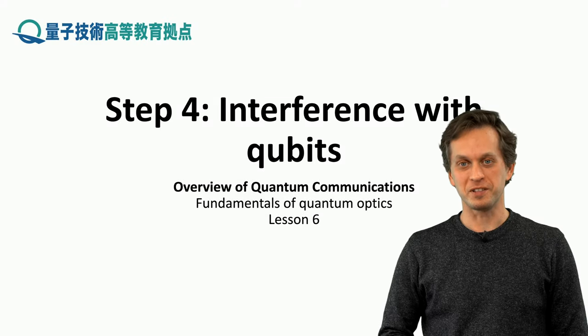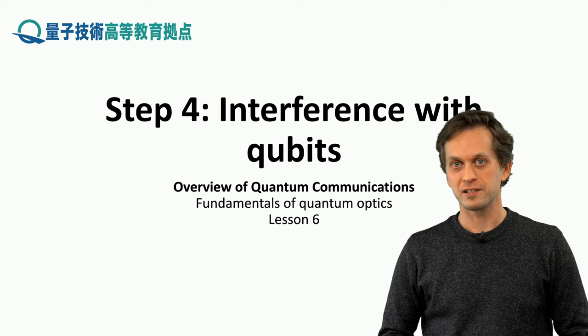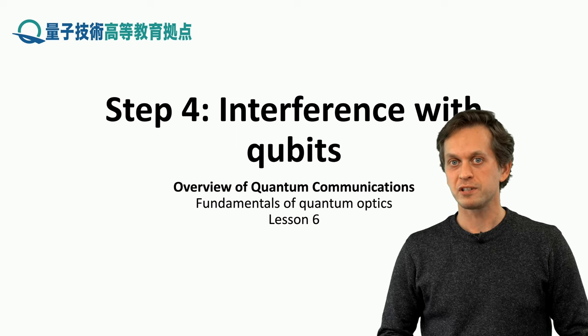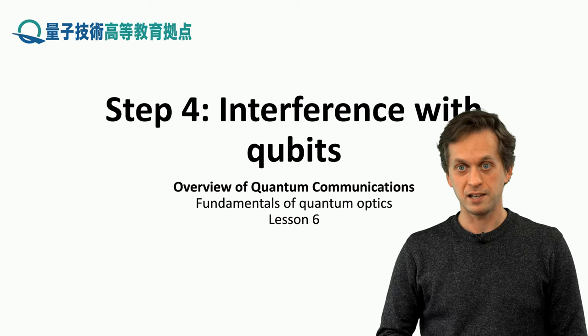Step 4. Interference with qubits. So we have seen how light interferes, how waves interfere, and even how single photons interfere. We can in fact see interference also with single qubits. Let's see how.